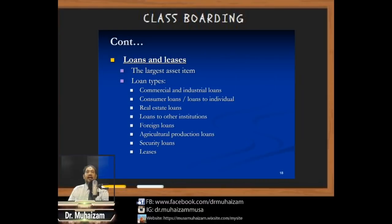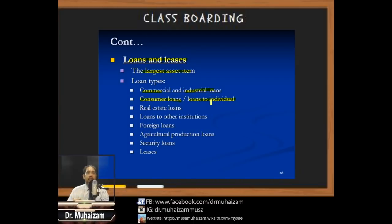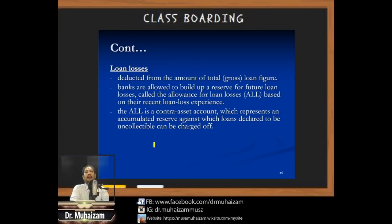Loans and leases are usually the largest asset item for banks. Loans consist of commercial and industrial loans, consumer loans, loans to individuals, real estate loans, loans to other institutions, foreign loans, agricultural production loans, security loans, and leases.